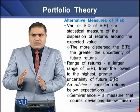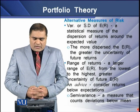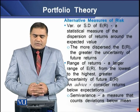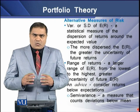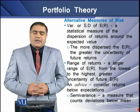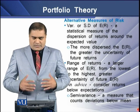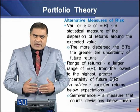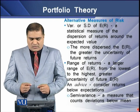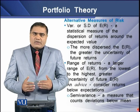Like expected rate of returns, we also have measures to measure the riskiness of individual assets and the portfolio of assets. One measure is called variance or standard deviation of expected return, which is a statistical measure of the dispersion of returns around the expected value. More dispersion in the expected returns means greater uncertainty about the rate of returns. Another measure is the range of returns, which is the difference between the highest and lowest values in the series of returns. There is also an advice for investors called semi-variance, which is a measure that counts deviations below the mean.